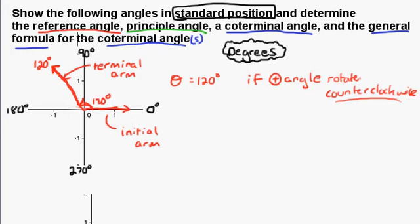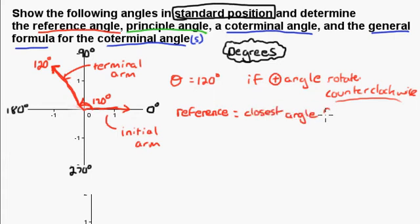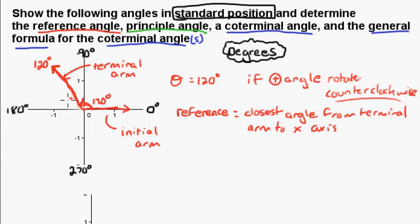The reference angle is always the closest angle from the terminal arm to the x-axis. Here, the closest angle from the terminal arm to the x-axis — remember this is the x-axis — is the angle inside. From 120 degrees, you have 60 degrees more to reach 180. So the reference angle is 60 degrees.